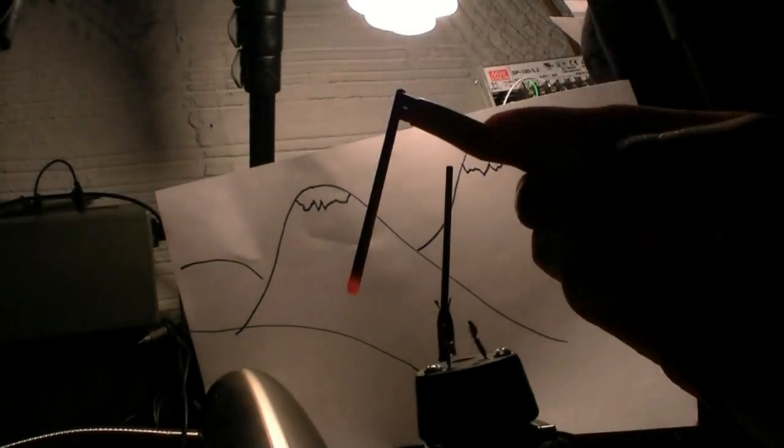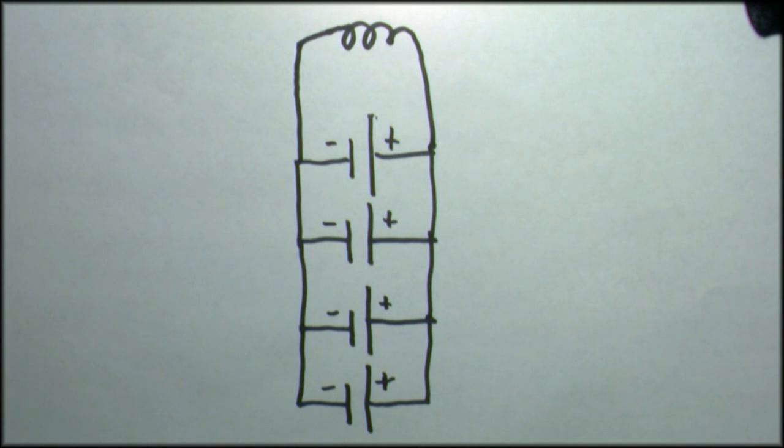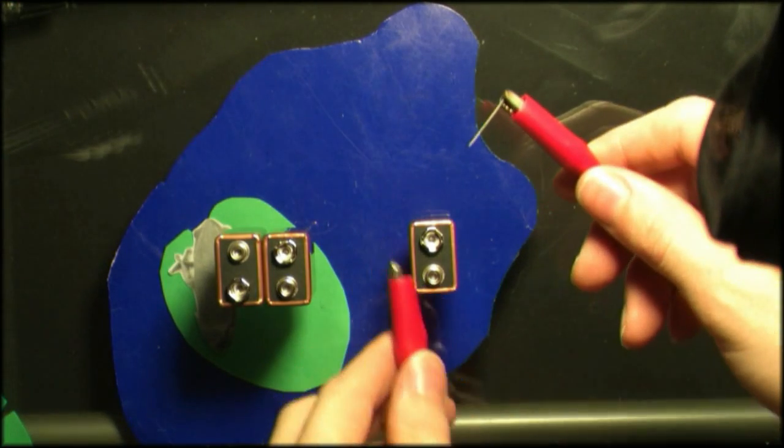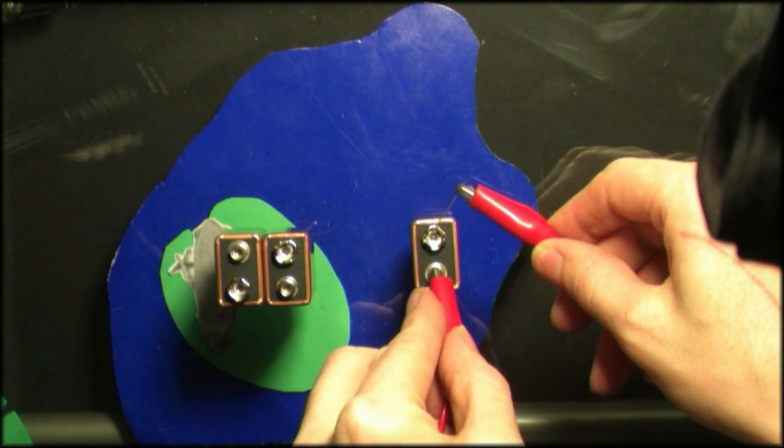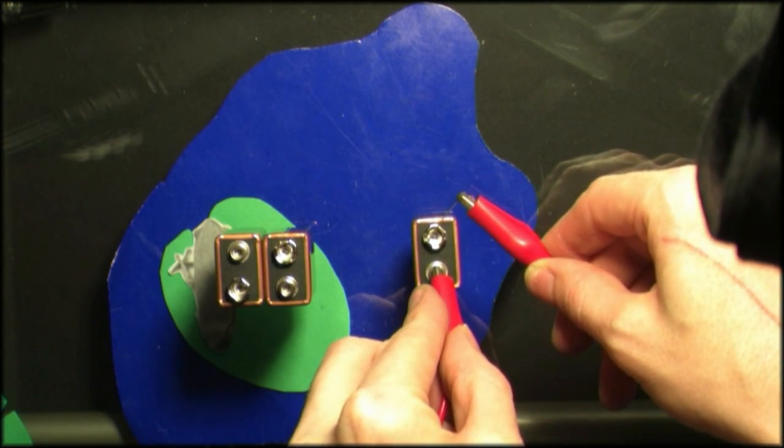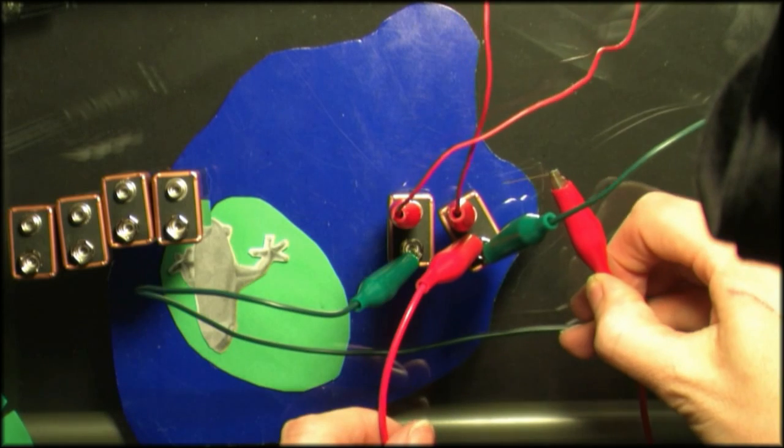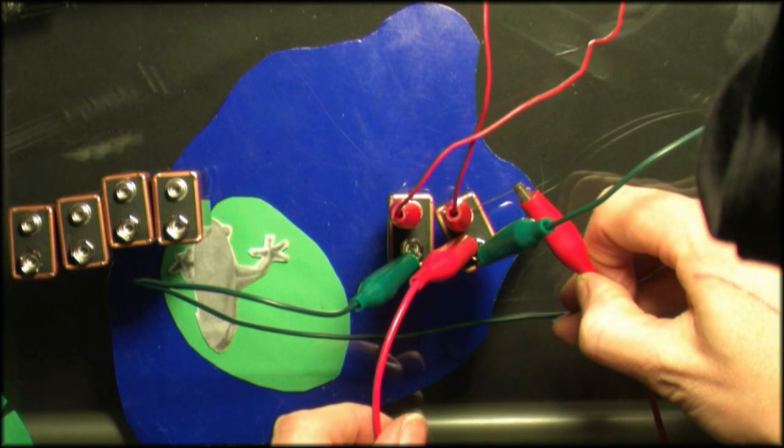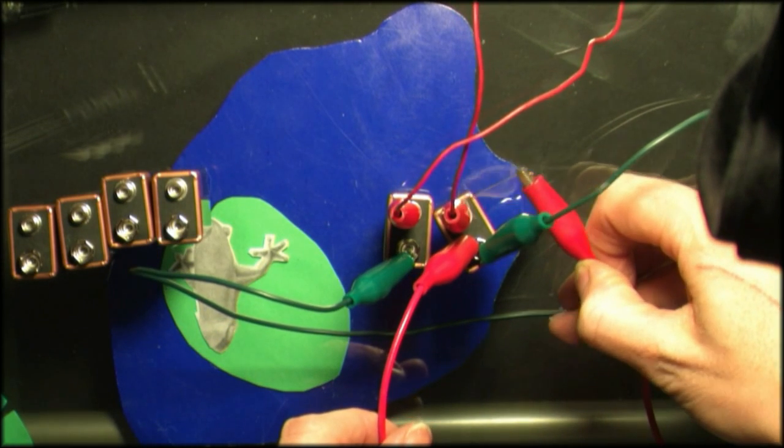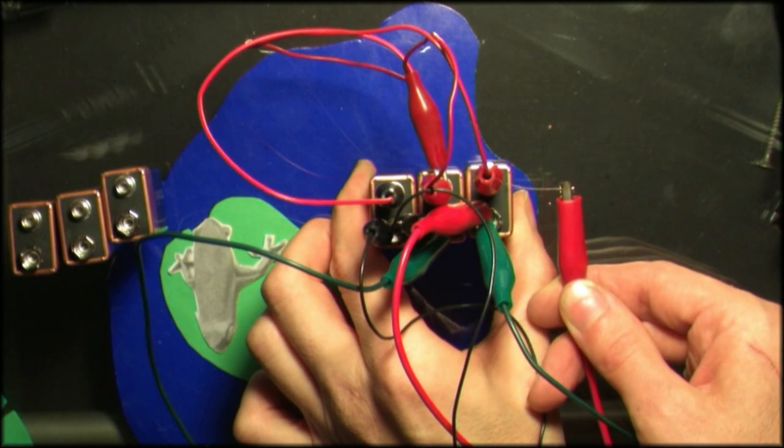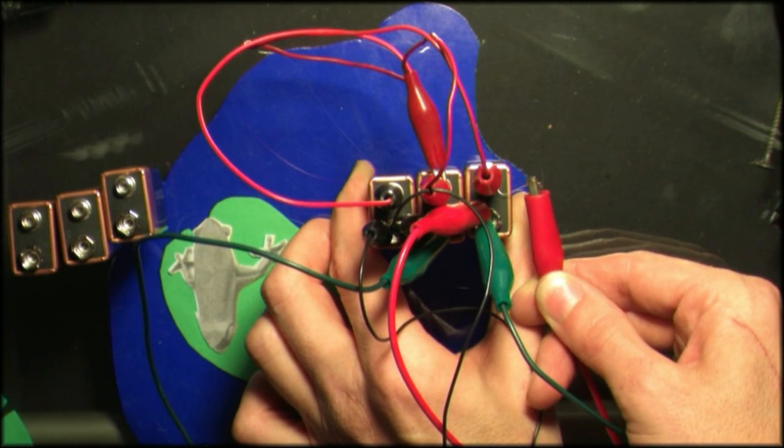If you need to increase current you can put batteries in parallel. This is effectively making their plates a larger surface area. Here I'm shorting a fine wire across the leads of a 9-volt battery. Not much happening. Now we see smoke when I hook two batteries in parallel and short the lead. And with three batteries it's far too much current for such a small wire and it immediately melts.